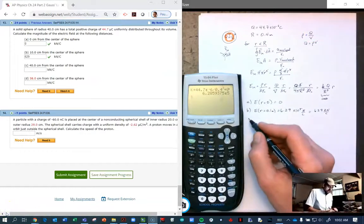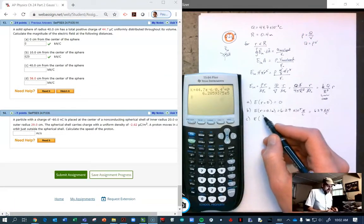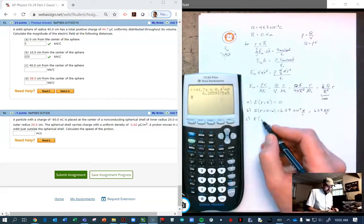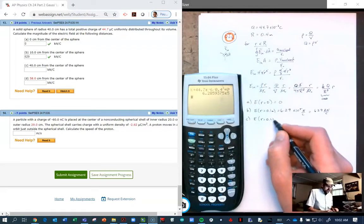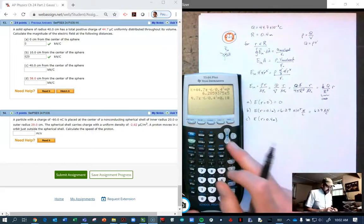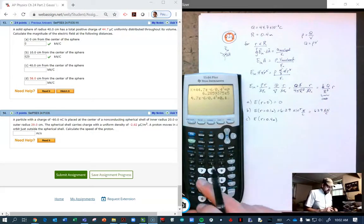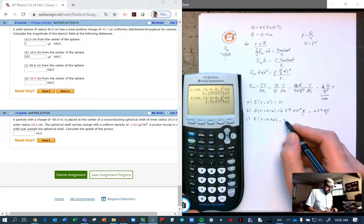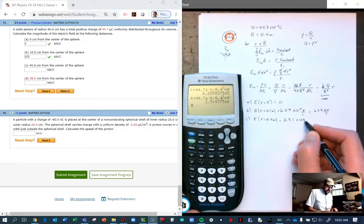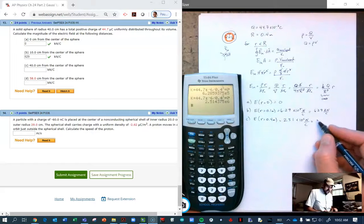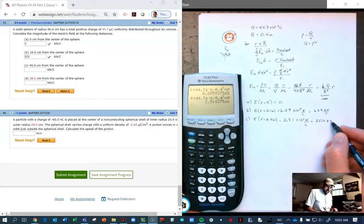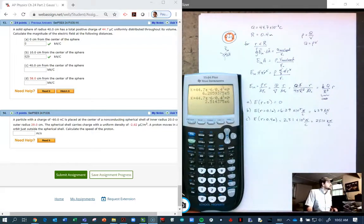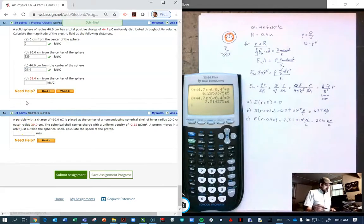And so now we continue with the electric field at the edge of our surface here. So r is 0.4 meters. And for that I can just do second enter and change my radius to 0.4. 2.51 times 10 to the 6th newtons per coulomb is 2510 kilonewtons per coulomb. And that's on the very edge of our surface.